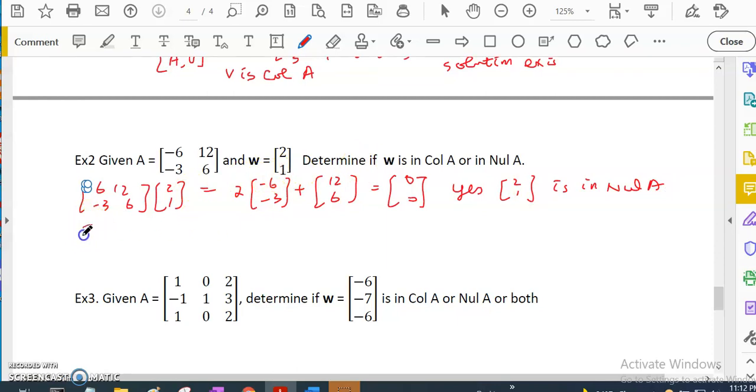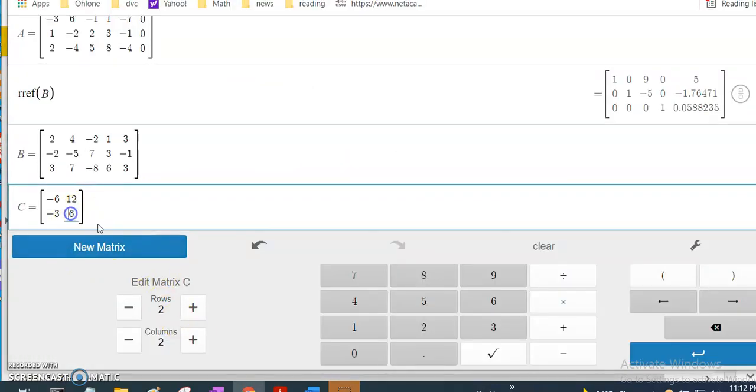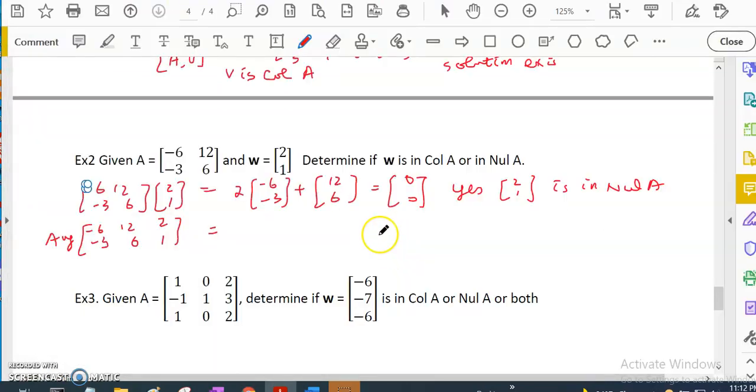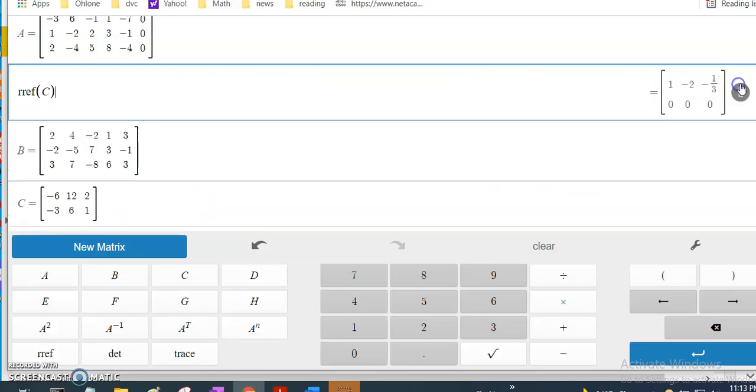What about if it is in column A? To check column A, you have to do the augmented matrix of [-6, -3; 12, 6] with [2, 1]. I do reduced row echelon of C. I don't have any contradictions. The RREF becomes [1, -2, -1/3; 0, 0, 0]. Solution exists, it's consistent. So [2, 1] is in column A. You can do a linear combination of them.